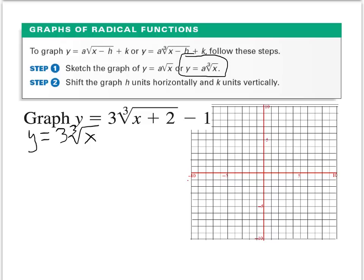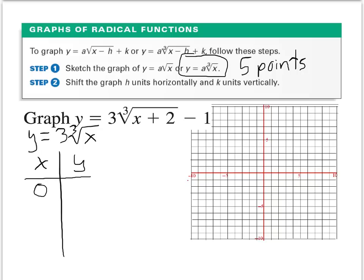For cube root functions, I want at least 5 ordered pairs in my x and y table. This differs from the square root function because x values can be negative — negative numbers can have cube roots. So I'll use 0, 1, negative 1, 8, and negative 8. These all have perfect cube roots.